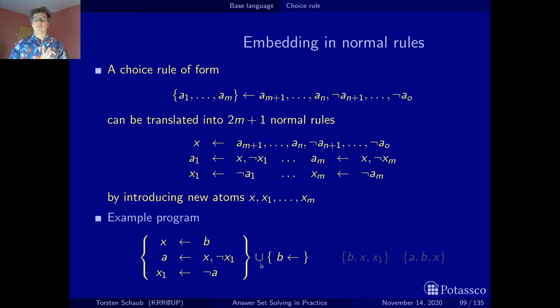In any case, we have B - it's a fact. Since we have B, we also have x. So all the stable models must contain B and x. Now here, since x is already satisfied, we have this even loop. So we either have A or we have x1. x1 stands for the absence of A, or the negation of A. Hence, we get two stable models. Both of them contain B and x. But one contains A, and the other one contains x1, which stands for not having A, for the absence of A.